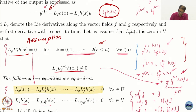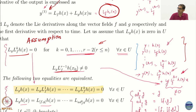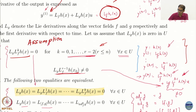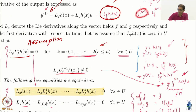Until r minus 2, this term is 0. You take one more derivative; the term multiplying the control will be Lg Lf^(r−1), and that is not 0. So in the rth derivative of y, you see that the control appears.